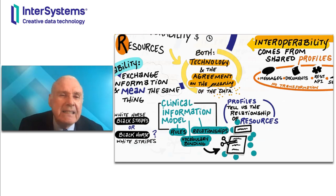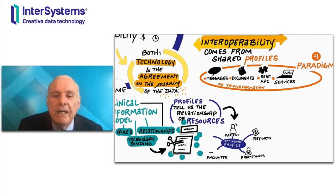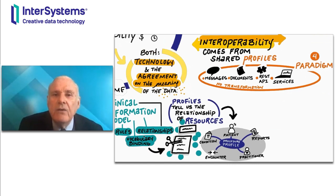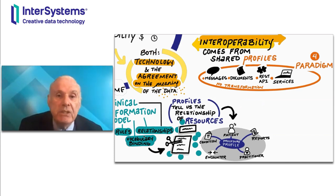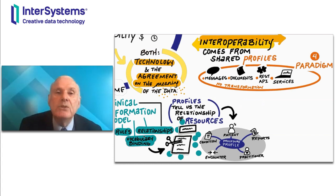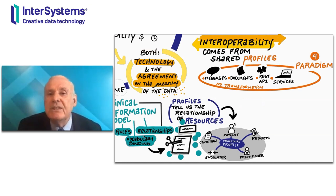As an example at the 20,000 foot level of what a FHIR profile might be: consider a profile for a procedure, which might be a laboratory test, an imaging procedure, or a surgical procedure. All procedures have things in common: the name of the procedure as the FHIR procedure resource, a patient resource for the person on whom the procedure is performed, a practitioner resource for the individual performing it, an encounter in which it took place, a condition resource as the reason it was performed, and a diagnostic report as the results.